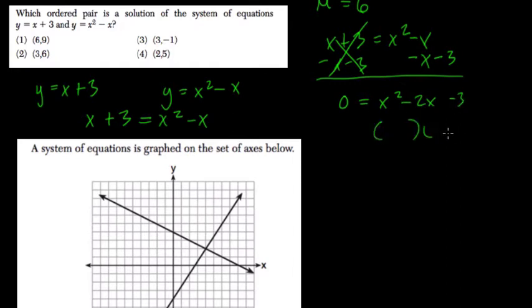Now we factor. We're going to have x's here. What factors of negative 3 add to negative 2? Well, we're going to have negative 3 and positive 1. They multiply to negative 3 and add to negative 2.